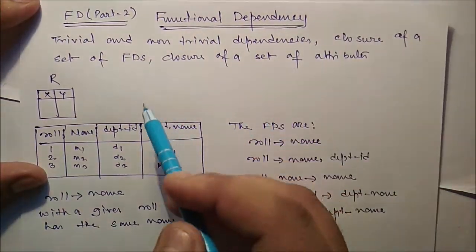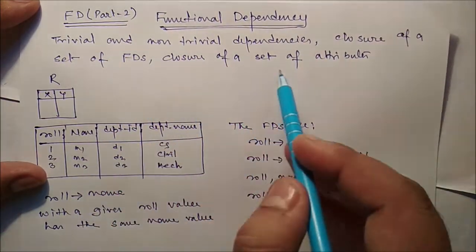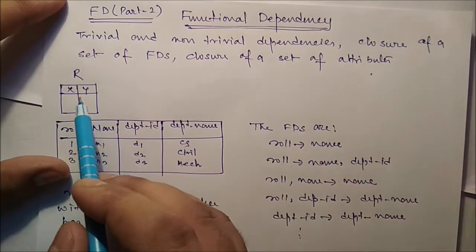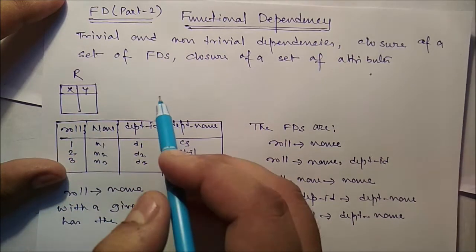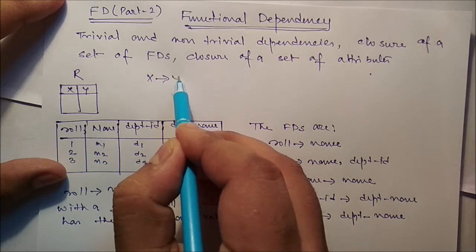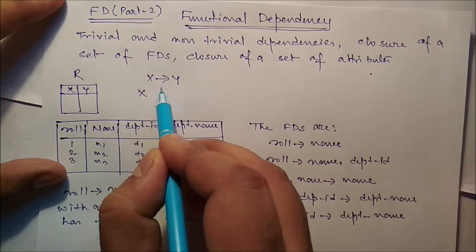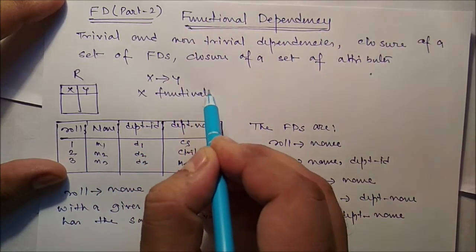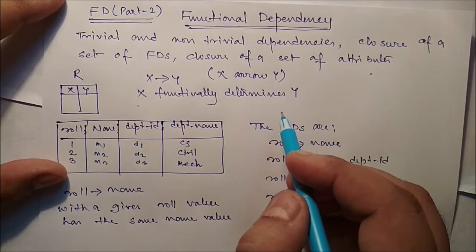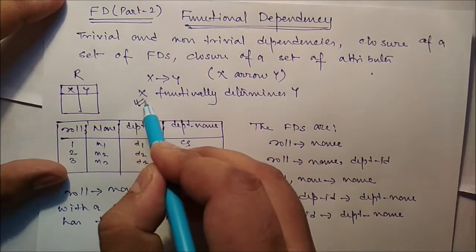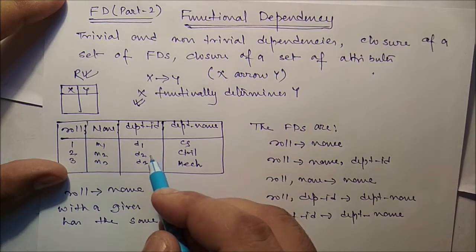Welcome back. In this video we will talk about trivial and non-trivial dependencies, closure of a set of FDs, and closure of a set of attributes. We have a table R with attributes X and Y. We write X→Y, meaning X functionally determines Y — that is, if and only if each X value in R has associated with it precisely one Y value in R.